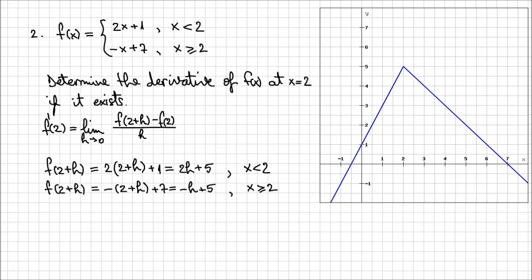What I'm going to do next is calculate the derivative, but I cannot calculate the limit directly because this is a piecewise defined function. Therefore we're going to have to calculate the left-hand limit and the right-hand limit separately in order to determine the overall limit. Only if both the left-hand and right-hand limits exist and are equal can we say the limit exists and the function has a derivative here.